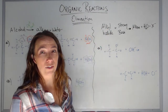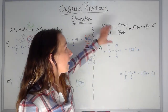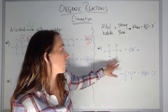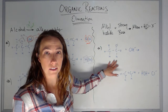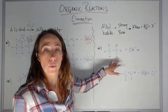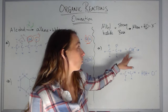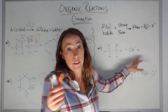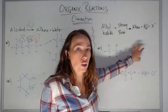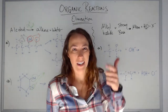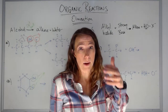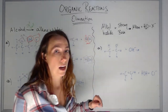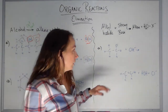Here's the second type of elimination reaction: alkyl halides with a strong base. So it might say react chloroethane with sodium hydroxide, potassium hydroxide, or just hydroxide ion. Any group one hydroxide works — sodium hydroxide, potassium hydroxide, rubidium hydroxide, or simply the hydroxide ion.